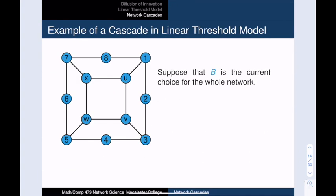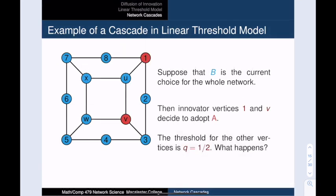So let's watch another example of the update process. We will start with the entire network using behavior B. Then we will have two innovator vertices, 1 and V, and we will follow a linear threshold model using a threshold value of one half. So which vertices change because of 1 and V? It turns out that three vertices change right away: U, 2, and 8. And then, as a consequence, 3 changes to red. And then 4 changes. And at this point, the chain reaction halts. No other vertices will adopt the new behavior. We call this total chain reaction a cascade.